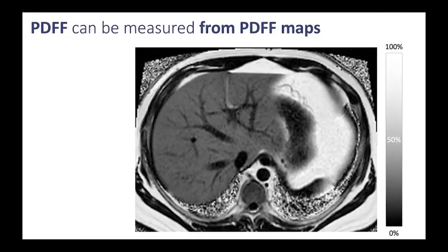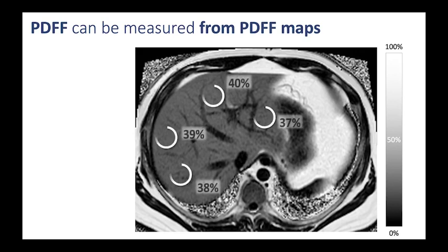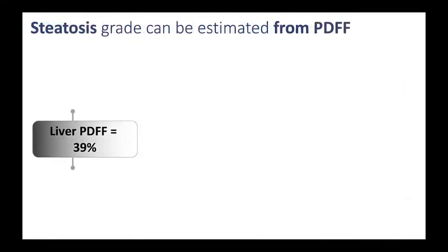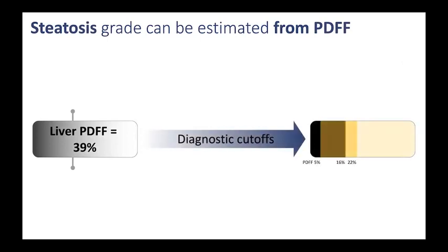If you have a proton density fat fraction map collected using a correct acquisition and modeled using a correct modeling technique, what would you do with it? Again, you can place regions of interest — I typically draw four ROIs, two in the right lobe and two in the left lobe. I make my measurements and take the average; in this case, I get 39%. Once I get 39%, I can convert that into a steatosis grade based on diagnostic cutoffs. In this particular case, 39% PDFF is greater than the 22% cutoff, so I can say that this patient has severe steatosis.